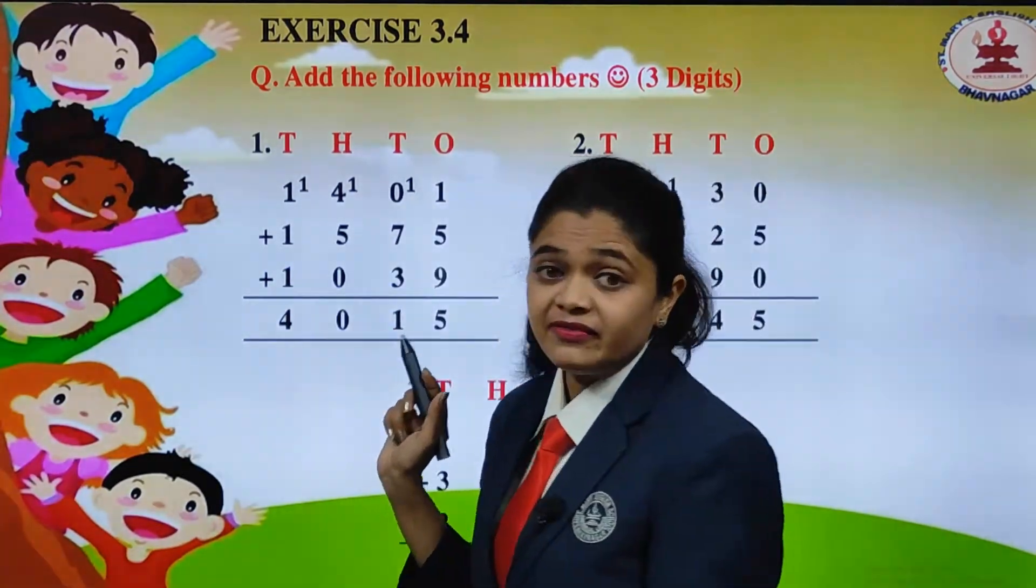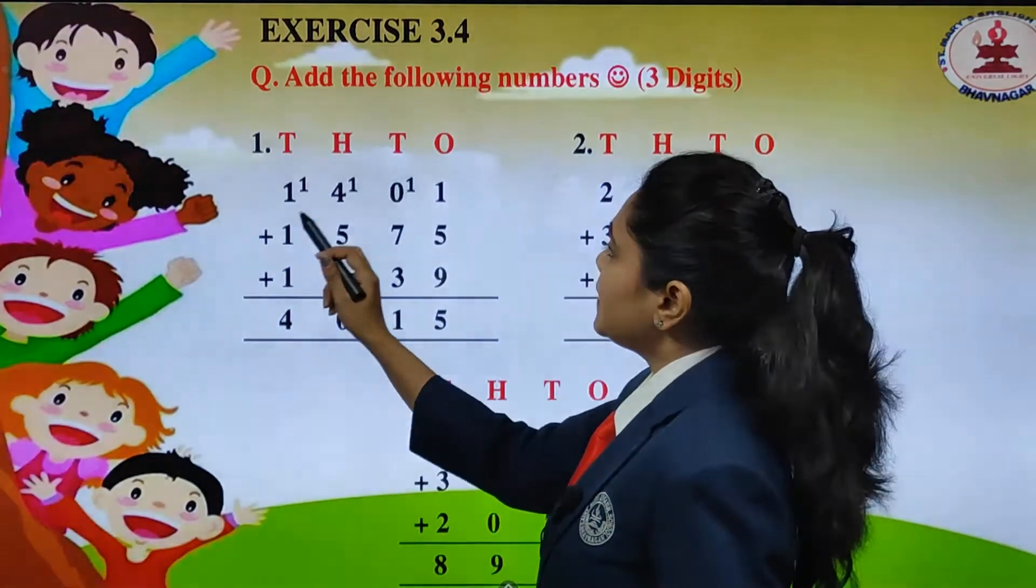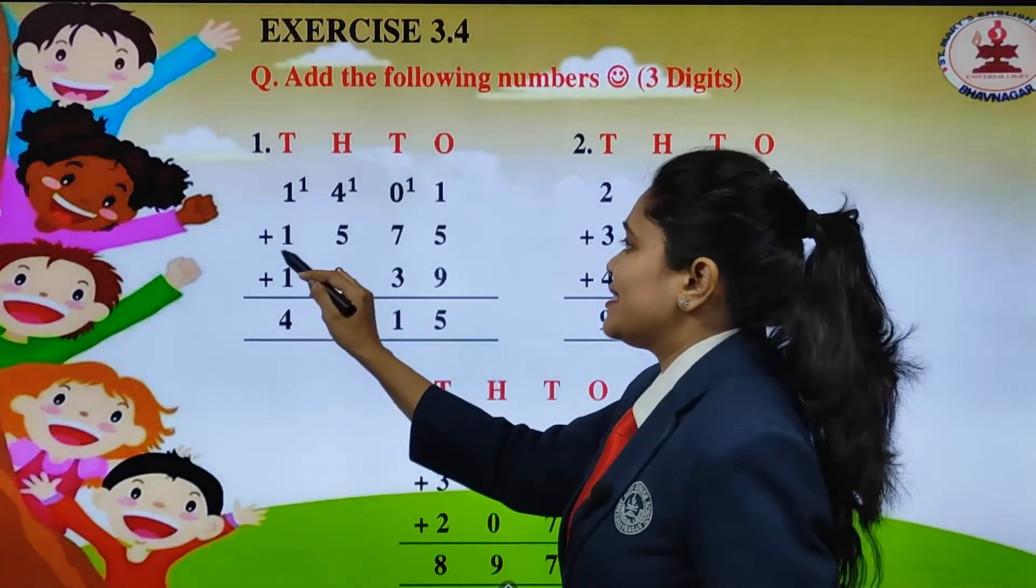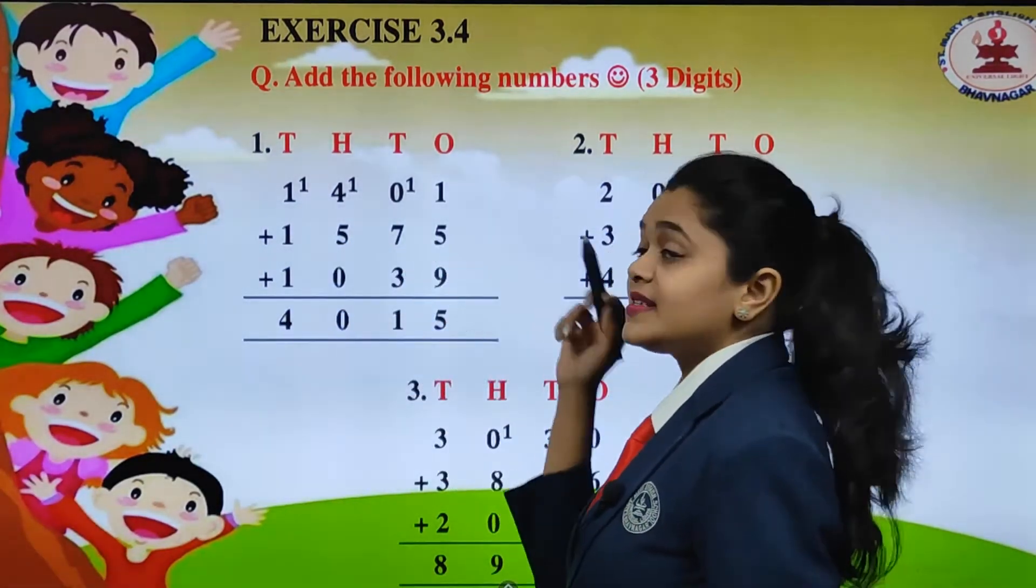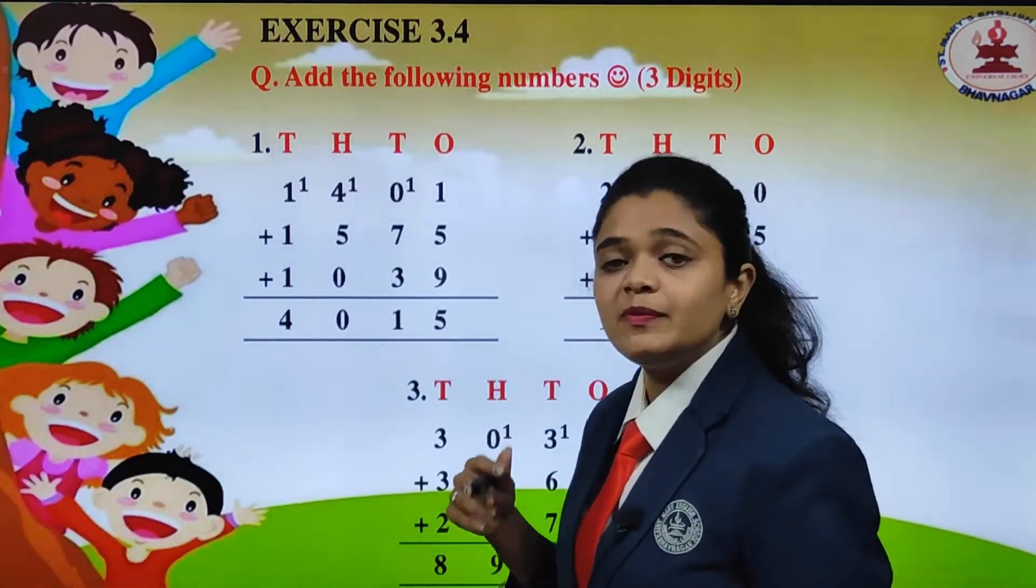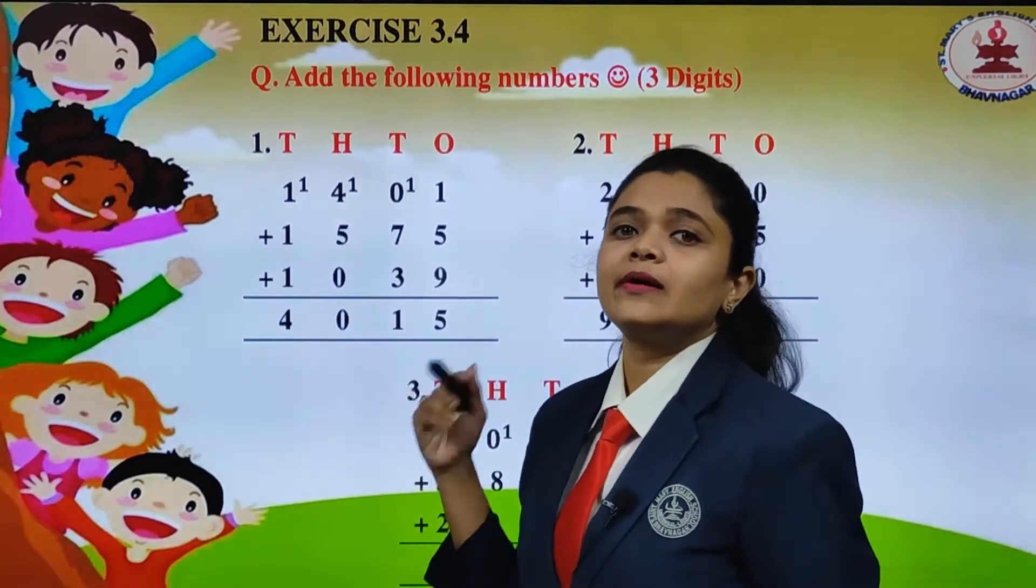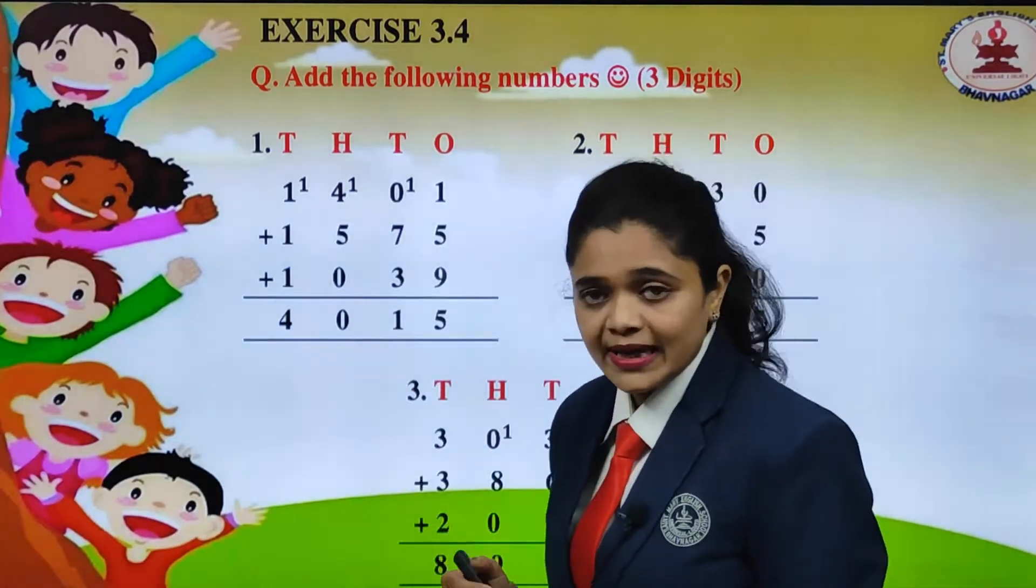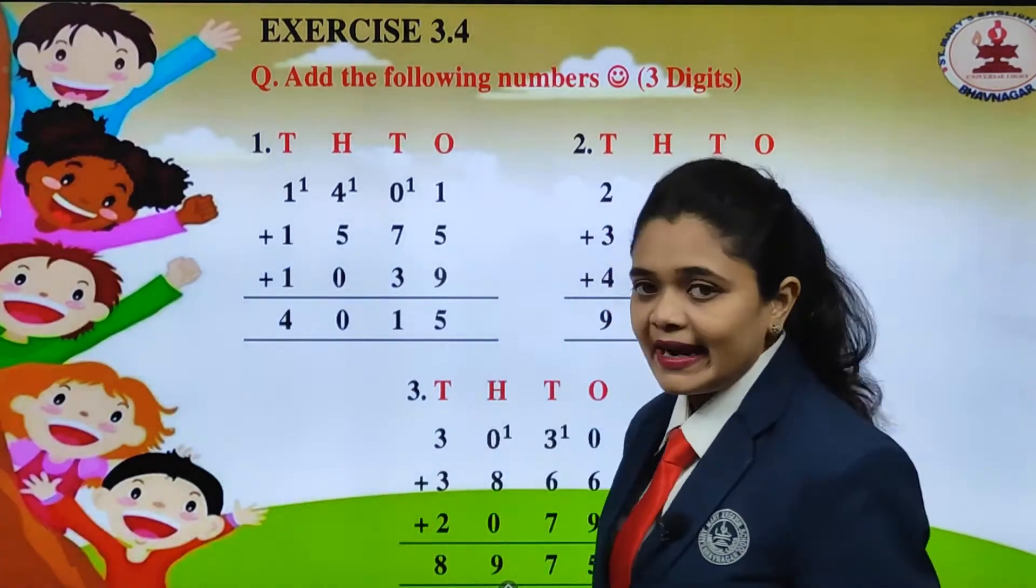See children, we have the first number that is 1401. Next number 1575. Next is 1039. So we have placed all the numbers according to the place value. Now we will start adding in.